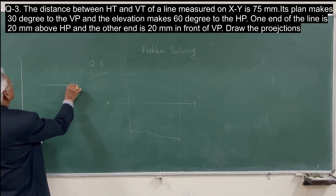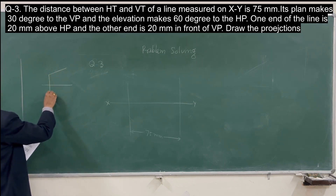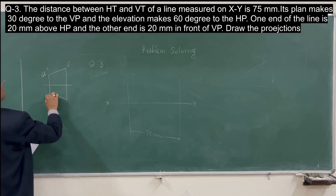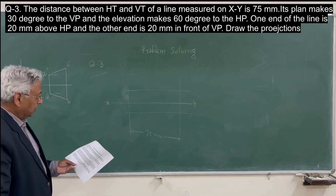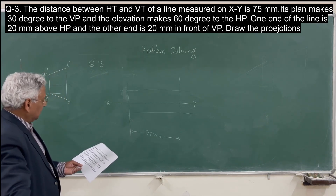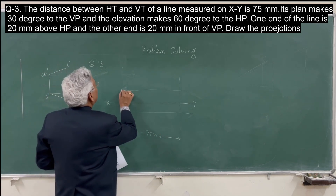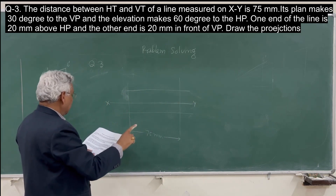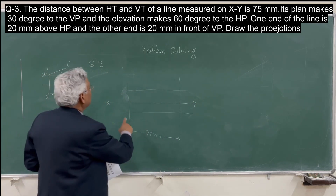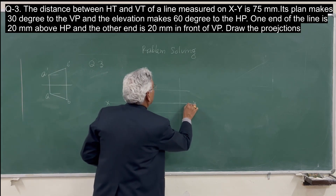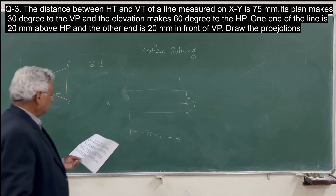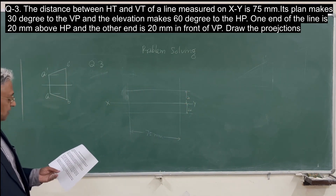Now see here — this is the elevation of any line. The angles shown are not the true angles of the line. One end of the line is 20 mm above HP and the other end B is 20 mm in front of the vertical plane. The horizontal trace and vertical trace are at positions such that if you remember this figure — how we find the traces — you take the horizontal trace and join to the vertical trace.